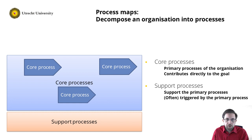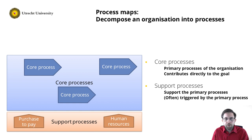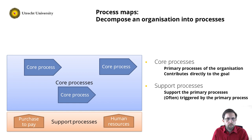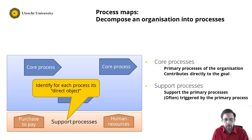The second class of processes are support processes. These support the primary processes of the organization and can be triggered by the primary process. We already saw an example: the purchase-to-pay process, which is triggered if there is insufficient stock in the warehouse. Another type of support processes are those that ensure the core processes can be executed at all — examples include human resource management and maintenance. We draw support processes below the core processes using a box with an edge pointing upwards, to indicate they do not directly add value but support the core. As an expert tip, make it a habit to always ask yourself: what is an instance of this process resembling? If you cannot answer this rightly, you need to rethink your process.